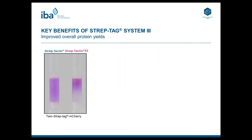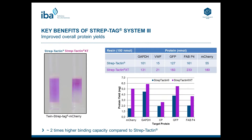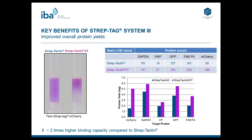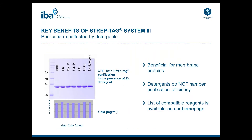Another benefit resulting from the improved binding kinetics is higher yields per milliliter resin. The same amount of Twin Streptag mCherry protein was loaded on one milliliter gravity flow columns of Streptactin and Streptactin XT. The maximum binding capacity of the Streptactin column was already achieved while only the upper third of the Streptactin XT column was occupied. Measurements show that the binding capacity of Streptactin XT versus Streptactin is up to two times higher, dependent on the recombinant protein — comparable to IBA Streptactin high-capacity resin, making it a more economical alternative.